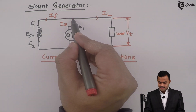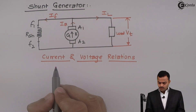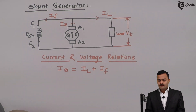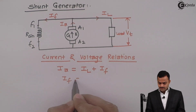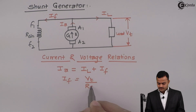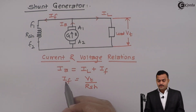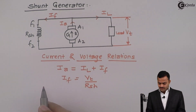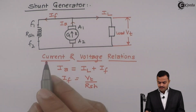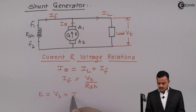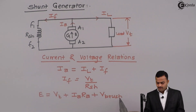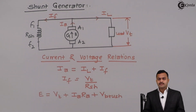It's very simple. At this junction, applying KCL: IA equals IL plus IF. And IF can be given as VT divided by RSH, so IF depends upon VT. For the voltage equation, applying KVL in this loop: EMF induced in the armature equals VT plus drop across armature IA·RA plus a small amount of voltage drop across the brushes, that is V_brush. This is the current and voltage relation in the shunt generator.